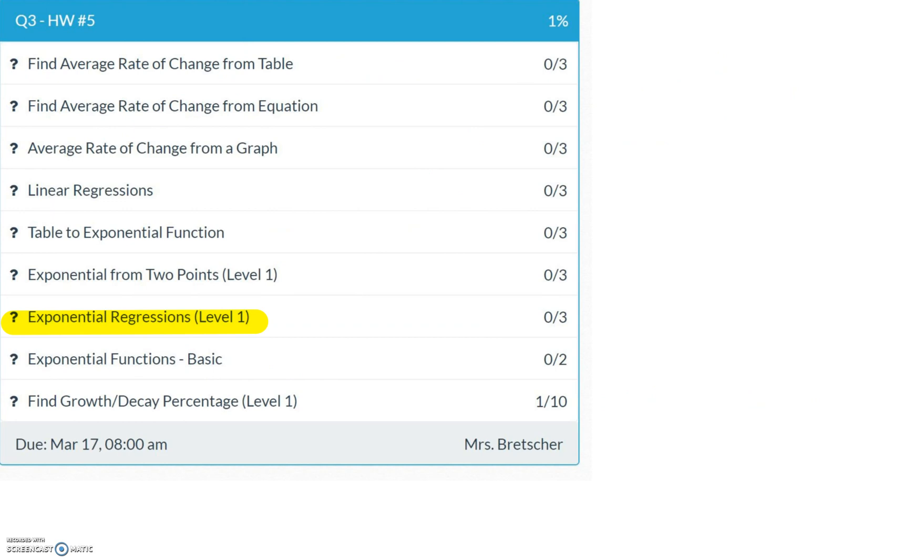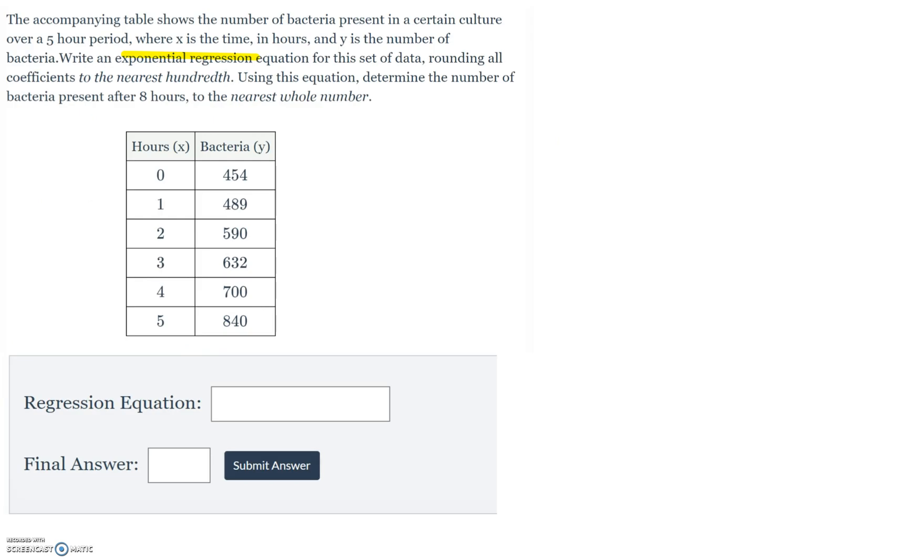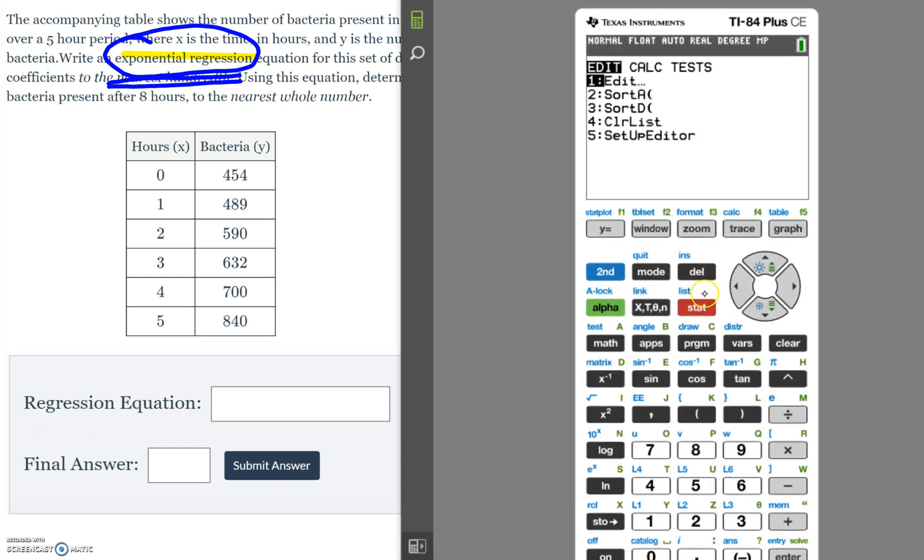The next question that we're going to look at is very similar, but this one is an exponential regression. So instead of using stat calc 4, we hit stat calc 0. So for here we have x, which is the number of hours, and y is the total amount of bacteria. And we want an exponential regression. And we're going to take all our numbers and round to the nearest hundredth, which is two decimal places.